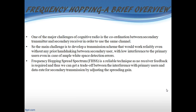The main objective is to develop a transmission scheme that works reliably without prior handshaking between the secondary users, without causing interference to the primary user, even in cases where spectrum sensing errors are unavoidable. Frequency hopping spread spectrum works reliably without any feedback, and we can get a trade-off between the interference with primary users and the data rate for secondary users using the frequency hopping spread spectrum scheme.